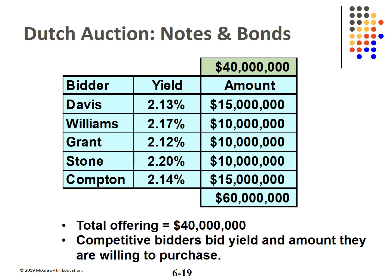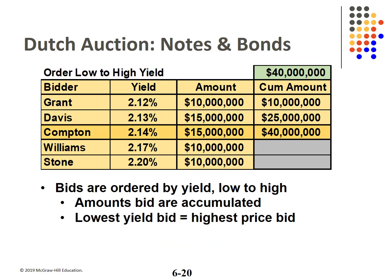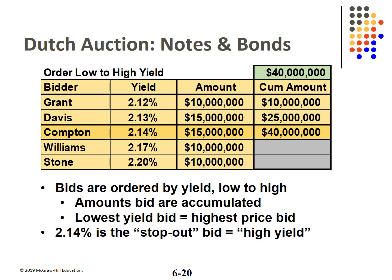To begin the auction, the Fed announces the amount of treasuries being offered — $40 million in this example. The five competitive bidders each bid an amount in dollars and a yield. Note that the lower the yield, the higher the bid. The bidders are ordered high to low, meaning low to high yield, and bid quantities are accumulated to hit the offered amount. This works out exactly, so the first three bidders get their bid amount.